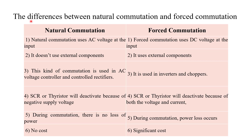Now let's discuss the differences between natural commutation and force commutation. First: in natural commutation we give AC supply at the input side, whereas in force commutation we provide DC voltage at the input side. When we apply AC supply, during the negative half cycle a reverse bias voltage appears across the device and it turns off naturally. With DC input, since DC voltage is constant and does not change with time, no reverse voltage appears and the device does not turn off naturally — so we must forcefully turn it off using external components or external circuitry.